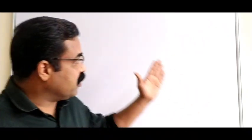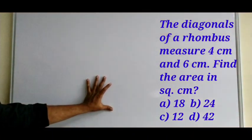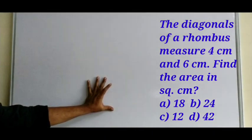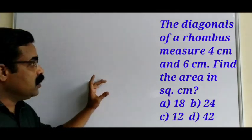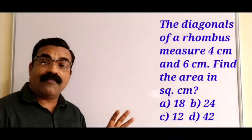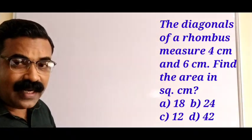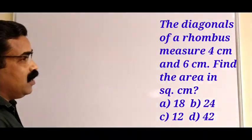Welcome back. Today we are continuing with the sample paper solutions. The first question is: the diagonals of a rhombus measure four centimeters and six centimeters. Find the area in square centimeters. Four options are also given. To find the area of a rhombus when two diagonals are given, let us first understand what a rhombus is.